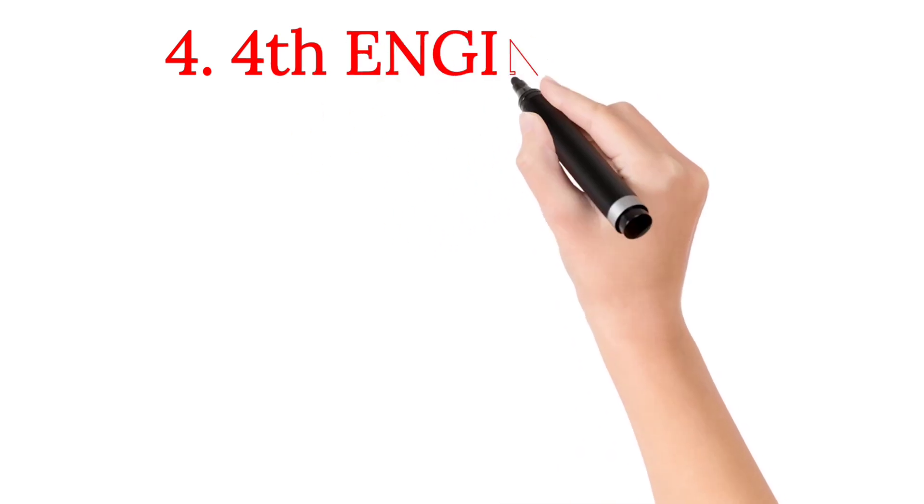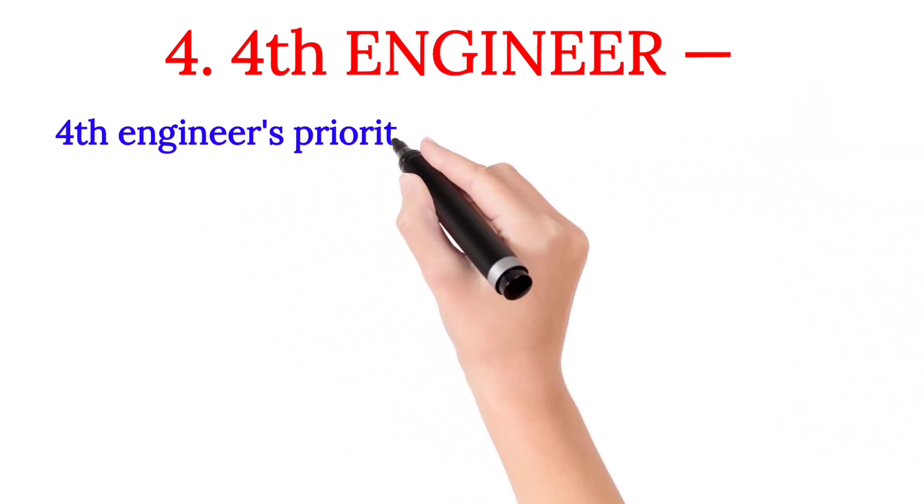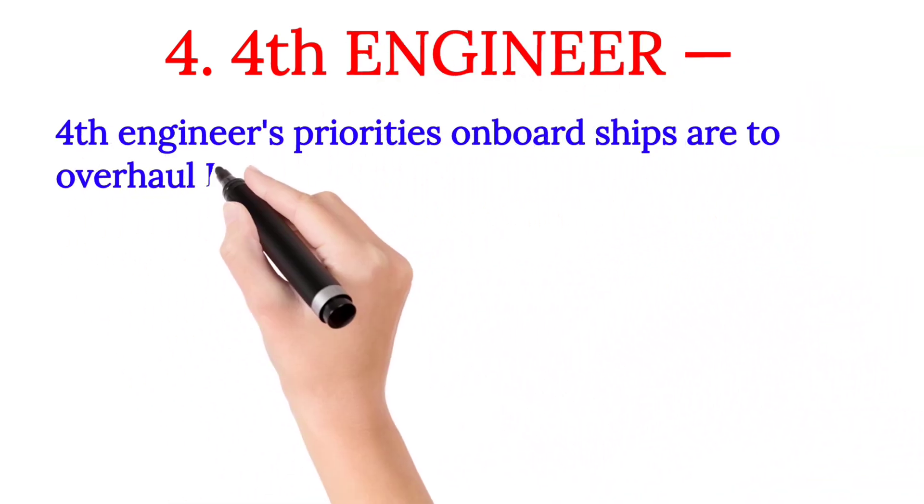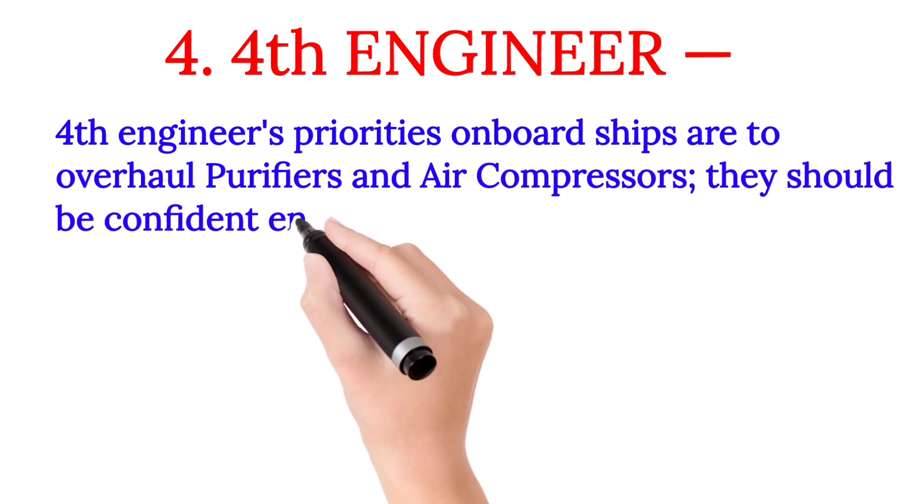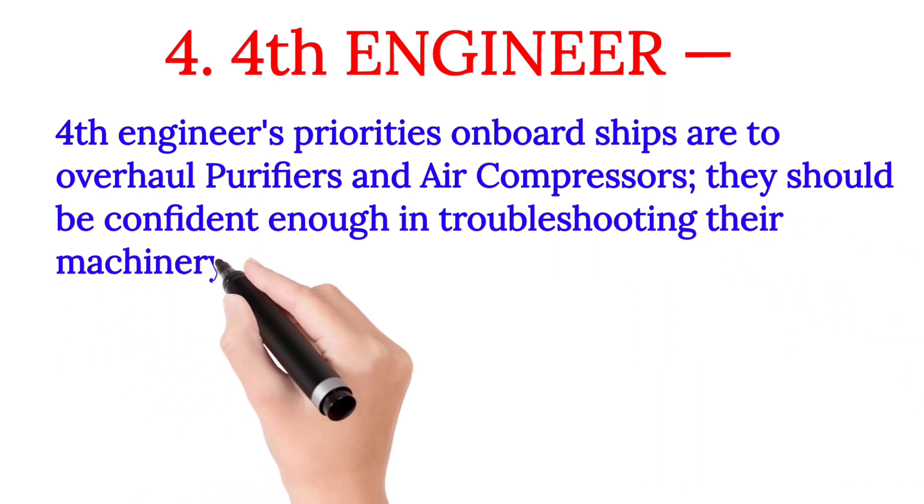Number four: Fourth Engineer. The Fourth Engineer's priorities on board ships are to overhaul purifiers and air compressors. They should be confident enough in troubleshooting their machinery.